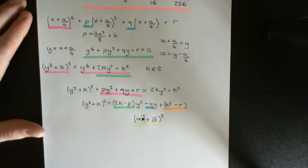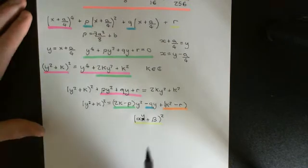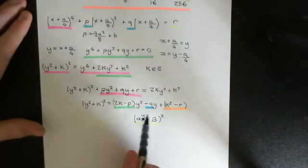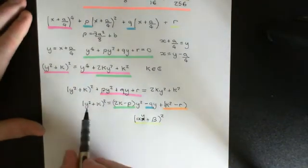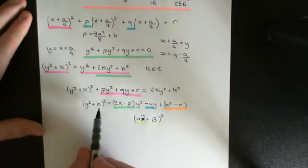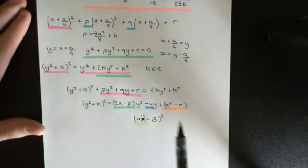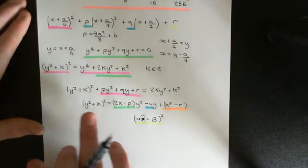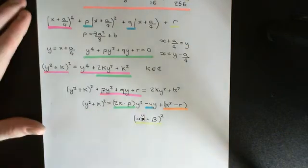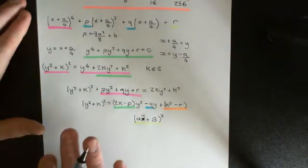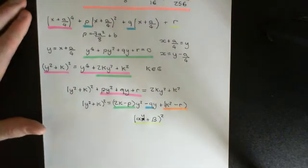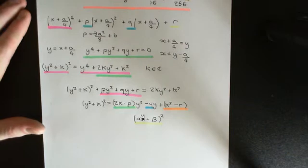What we're now saying is: what if we could pick k really cleverly, such that this quadratic on this side was a perfect square? Because if we could do that, what we would then get is that y squared plus k is equal to plus or minus alpha y plus beta. You'd then end up with two quadratic equations to solve. The first would be y squared plus k equals alpha y plus beta, and the second would be y squared plus k equals negative alpha y minus beta. You could then solve those two quadratic equations, each for two solutions, and end up with the four solutions to your original quartic equation.